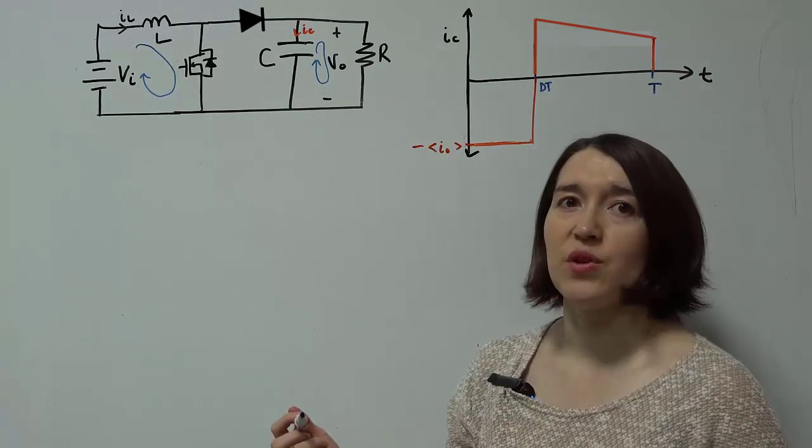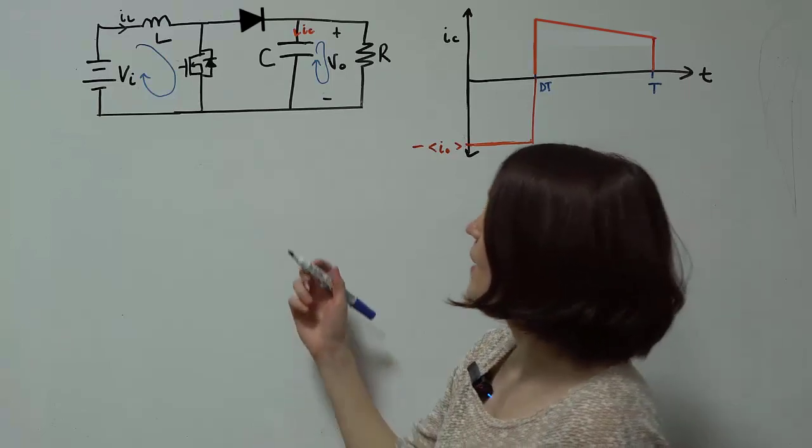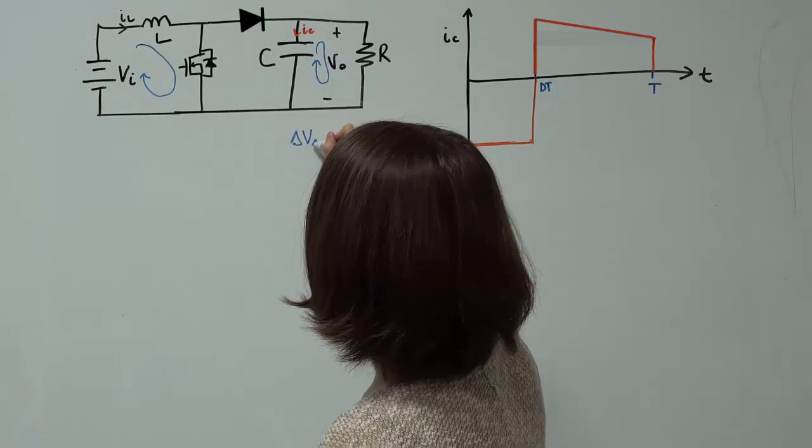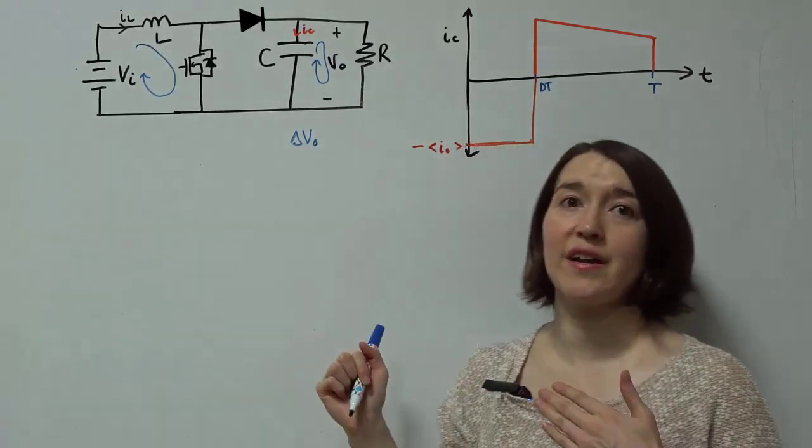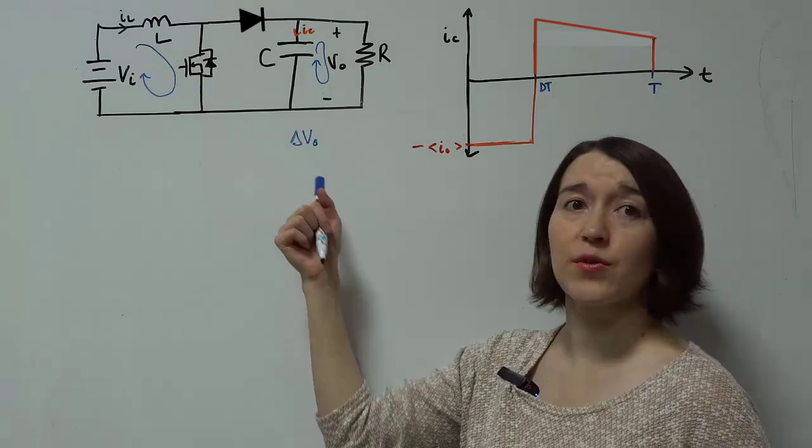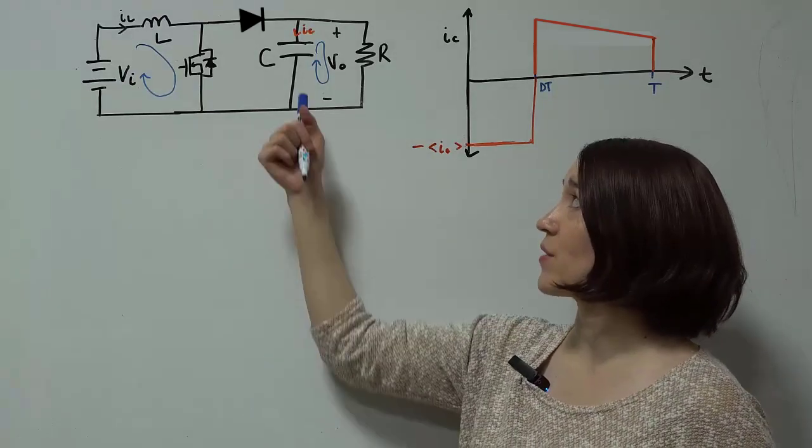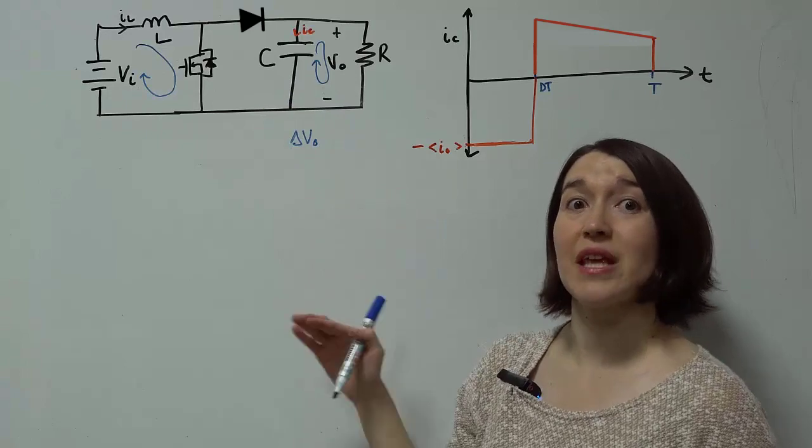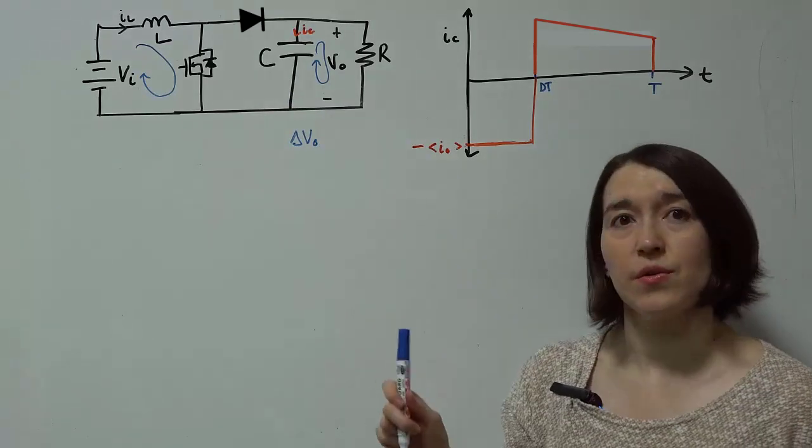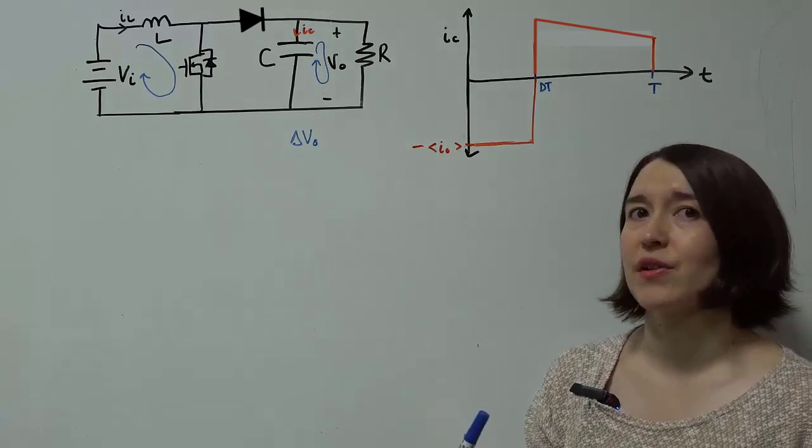And we're going to assume that you're given a delta V out, that is your target ripple, your voltage ripple. So assuming you have a voltage ripple that's your target, you want to pick a capacitor to ensure that your voltage stays within that ripple, this value or below. So to do that, we need to understand how the current is flowing.